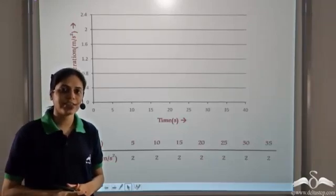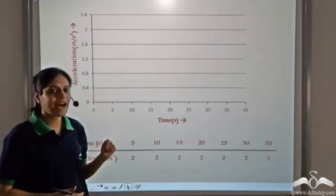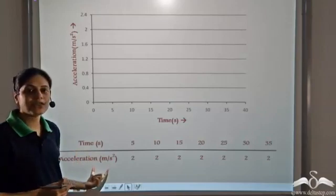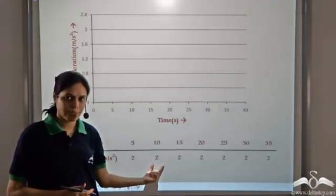Just as we had drawn the distance-time graph and the velocity-time graph, we can draw the acceleration-time graph. This table gives us the time taken and the corresponding acceleration for a body.